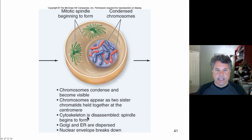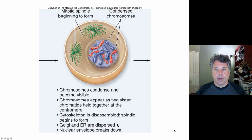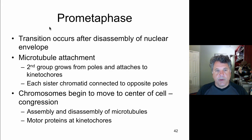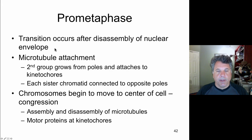The remainder of the cytoskeleton, besides the elaborating spindle apparatus, is breaking down. The Golgi and endoplasmic reticulum are dispersed and no longer recognizable as intact structures. The nuclear envelope breaks down. In prometaphase, this occurs when the nuclear envelope has been degraded. The lamin protein — an intermediate filament forming a meshwork underneath the nuclear envelope — is involved in the disassembly of that nuclear envelope.